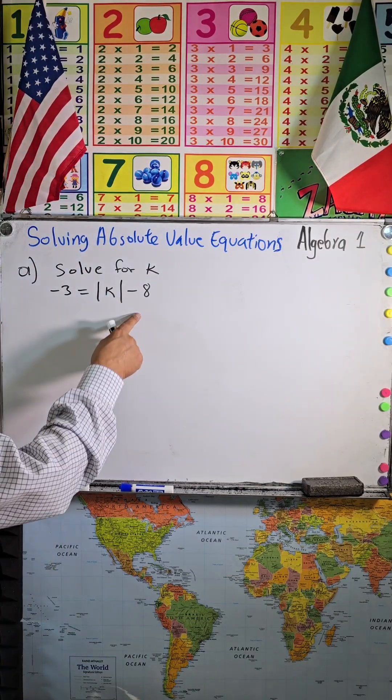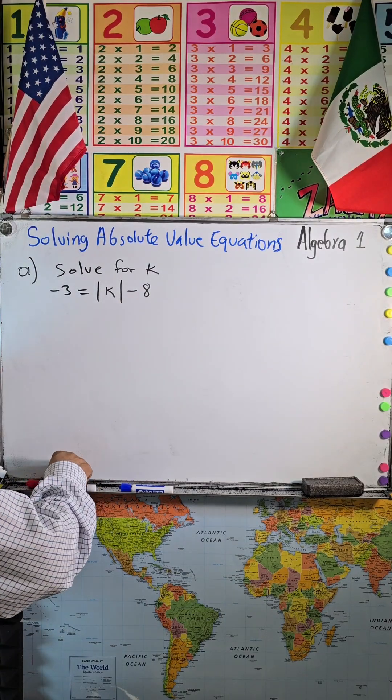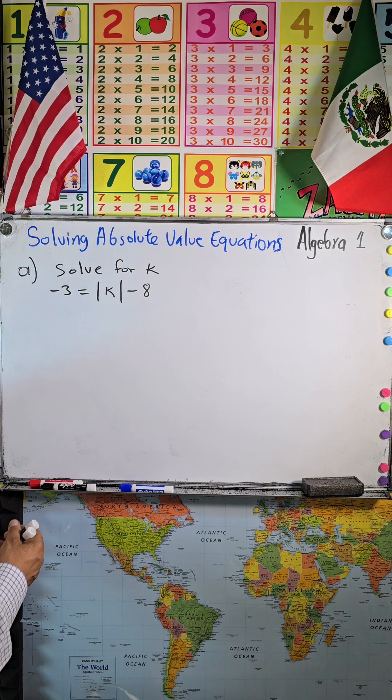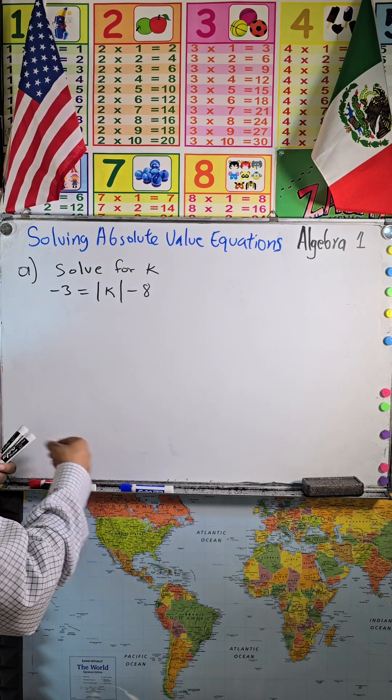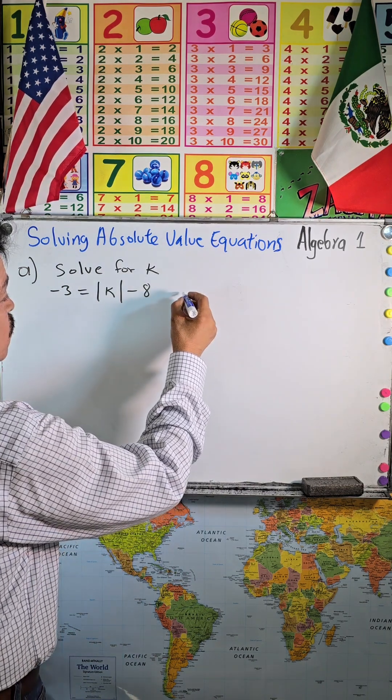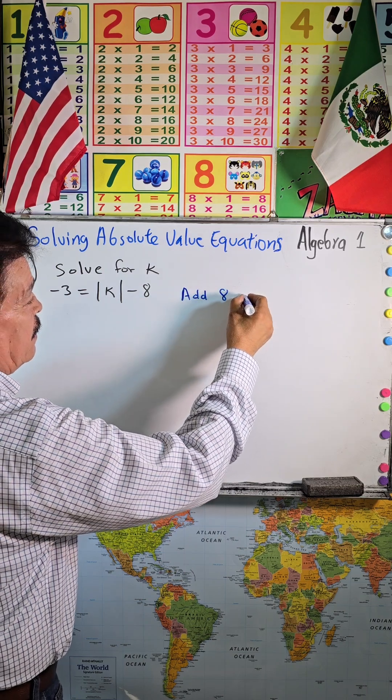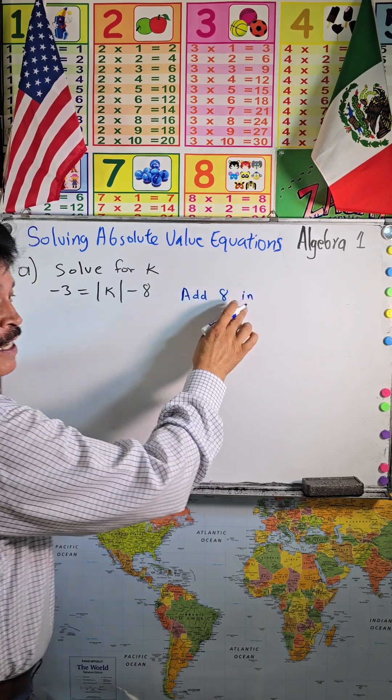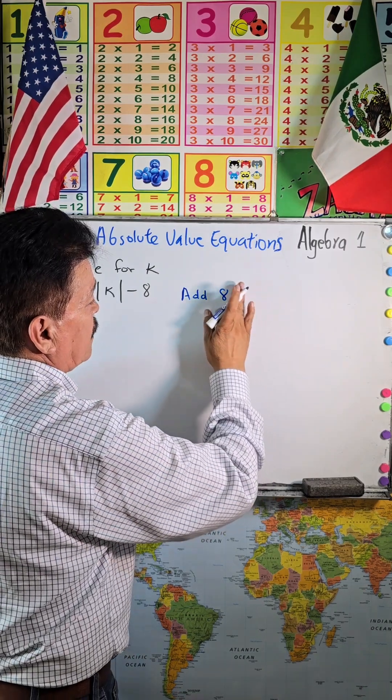So solve for x. The next step that we have here is to add 8 to both sides.